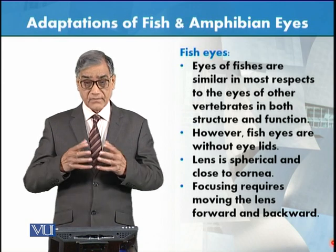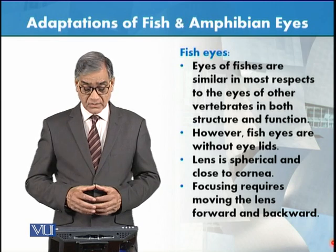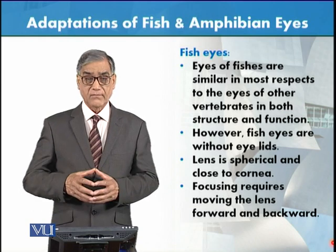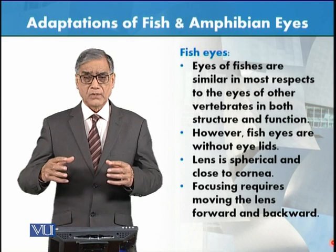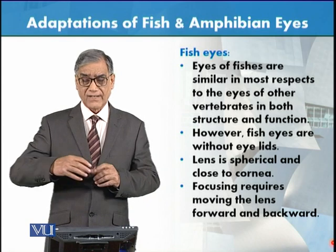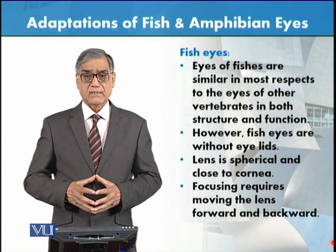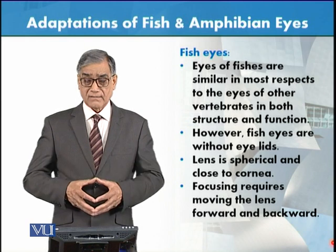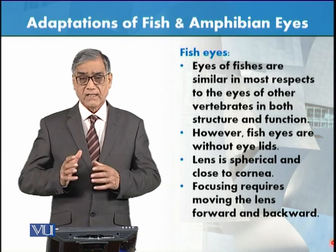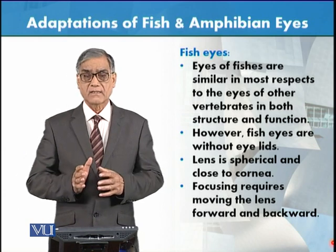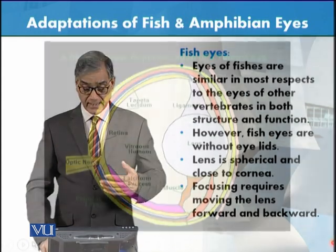لینز بھی spherical ہے اور it is very close to the cornea — یہ باہر نکلا ہوا ہے۔ تو focusing requires moving of lens forward and backward۔ جیسے ہم نے human eye میں accommodation دیکھی — human eye میں لینز flattening ہو جاتی ہے اور focal length چینج ہوتی ہے — لیکن ان animals میں، fishes اور amphibians بلکہ reptiles میں بھی، focal length نہیں بدلتی بلکہ lens آگے پیچھے ہو جاتا ہے، بالکل جیسے camera کے اندر ہوتا ہے۔